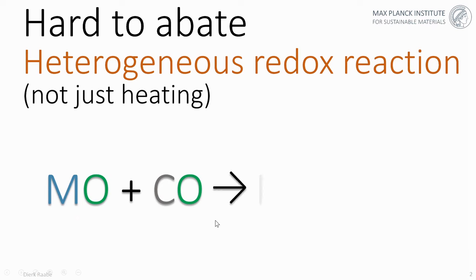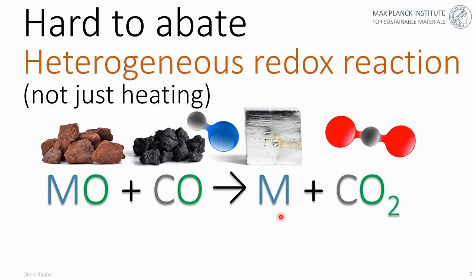These redox reactions have the structure where metal oxides are exposed to carbon monoxide as a typical reductant. In that heterogeneous redox reaction, you extract the iron and produce carbon dioxide. The mineral mostly used for steel production is hematite, with stoichiometry Fe2O3. The carbon monoxide is produced in blast furnaces by exposing coke to hot oxygen, which produces CO2 that goes through the Boudouard reaction, producing carbon monoxide as the fossil reductant.